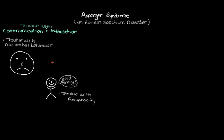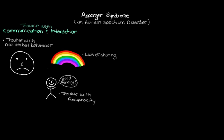Let's draw one final picture. Let's say it just rained and there's a really pretty rainbow in the sky. You might have a desire to point it out and share it with someone around you. But for someone with Asperger's, they don't really have this spontaneous desire to share something of interest or enjoyment with someone else. So they don't really point things out that interest or excite them, or share their achievements with other people. This trouble with communication and interaction is one of the main features of Asperger's.